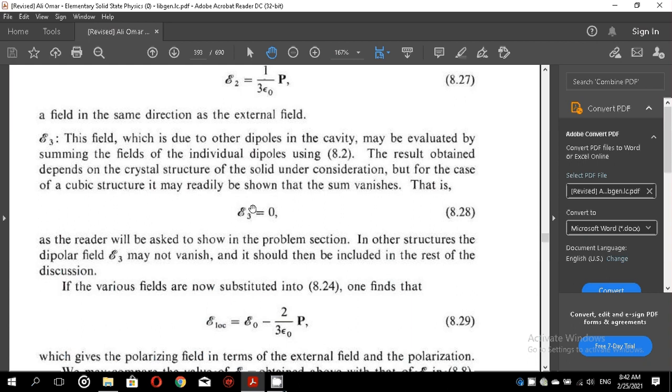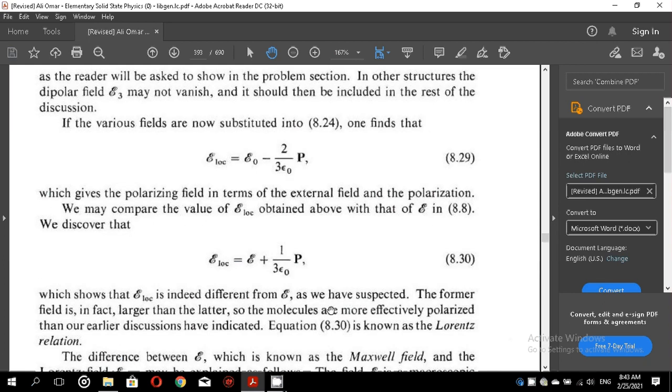In other structures, the dipole fields E3 may not vanish and it should then be included in the rest of the discussion. If the various fields are now substituted in equation 8.25 and simplified, the local field comes out to be equal to E0 minus 2 over 3 epsilon 0 p. So equation 8.29 will be used in various situations.